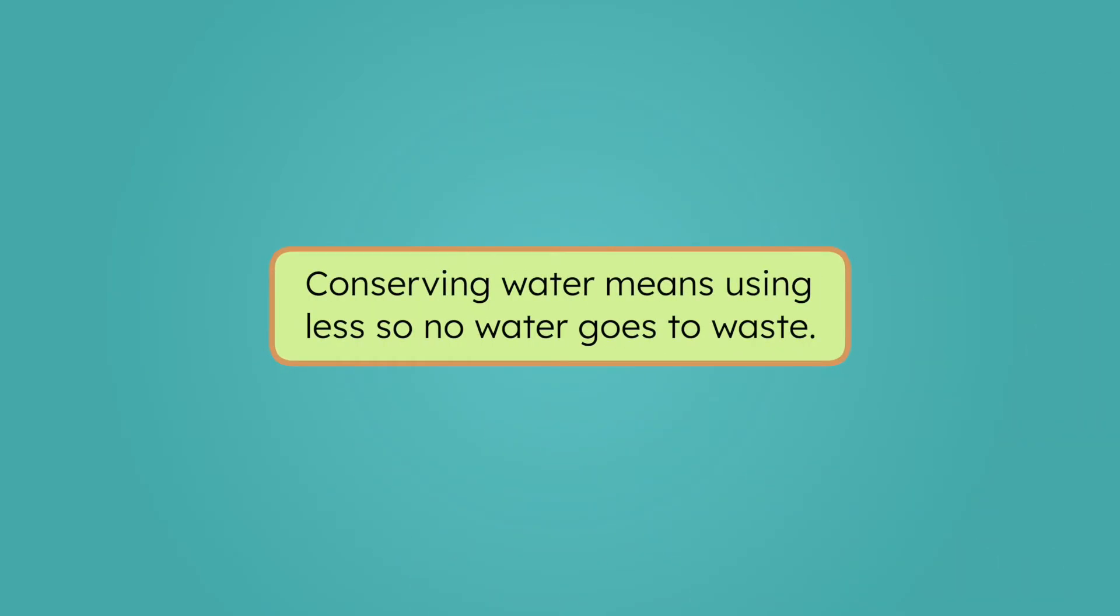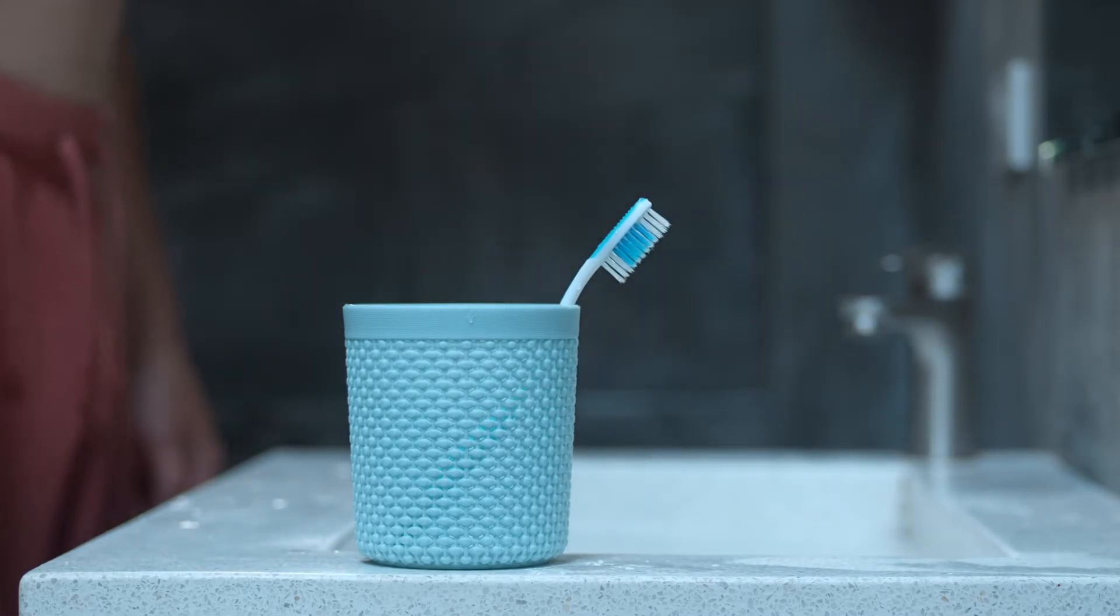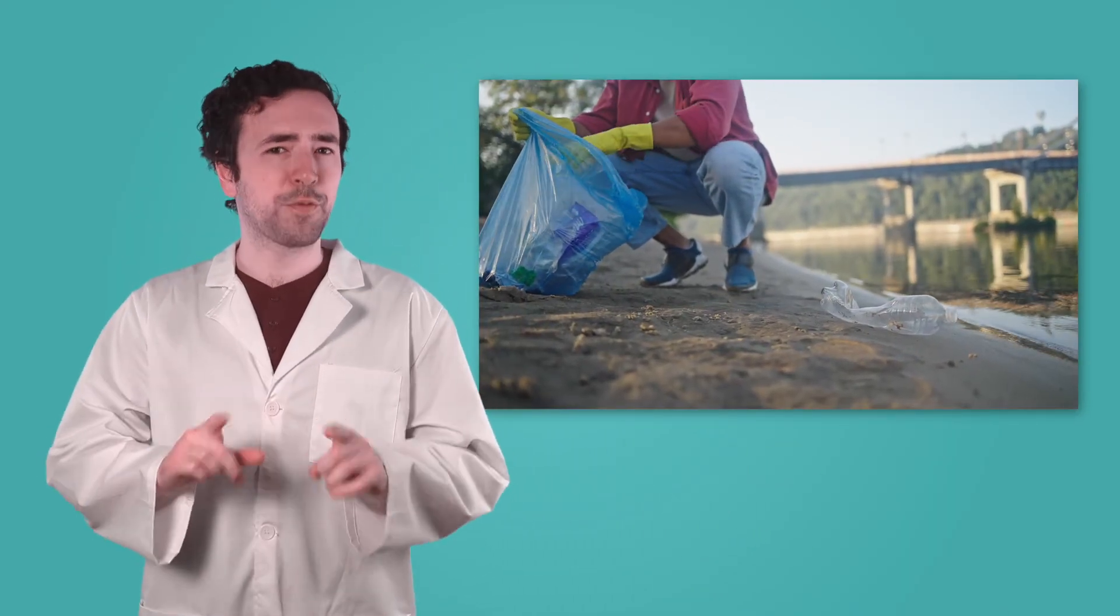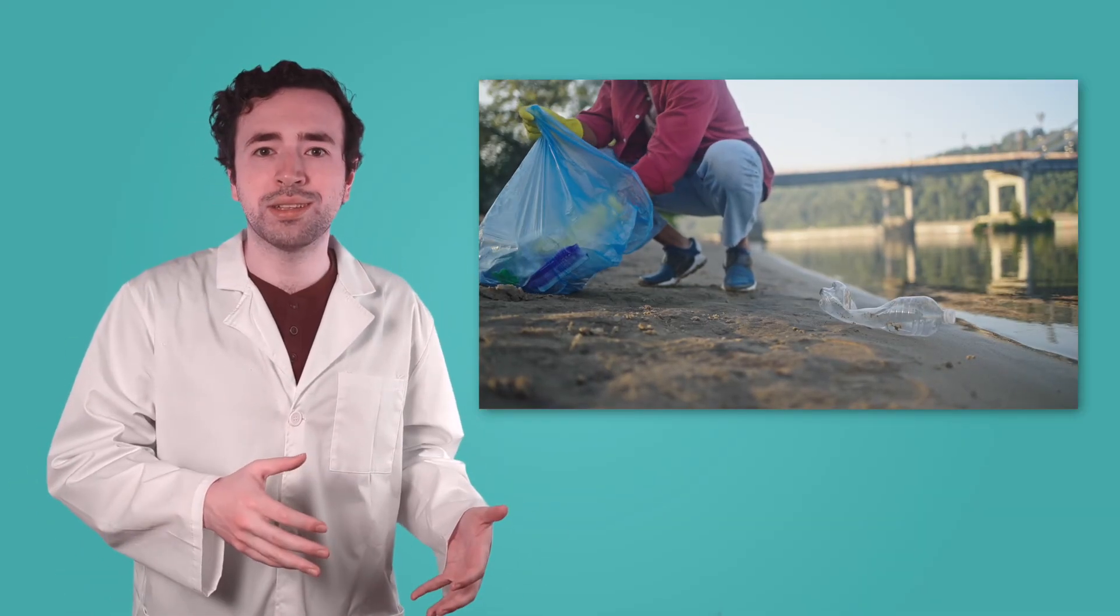Conserving water means using less so no water goes to waste. Small actions can make a big difference. Turning off the water while brushing your teeth, taking shorter showers, and fixing leaky faucets might not seem like much. But over time, these small choices add up. But conserving water isn't enough on its own. We also have to keep it clean. If our water sources get polluted, they can become dangerous for people and the environment. That's why it's important to pick up trash, be careful with household chemicals, and even clean up after our pets. Everything that washes into drains eventually makes its way back to our water sources. Water is precious, and we all have a responsibility to protect it. Whether it's using less water or keeping it clean, our choices help make sure there's enough water for everyone.